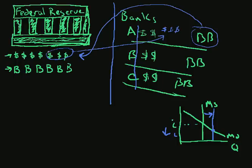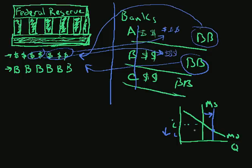Now the Federal Reserve could actually take these dollars, send them over here as well, and buy these bonds. Each one of these instances increases the reserves in these banks so that they can make more loans, increase the money supply, and you get this kind of effect: the money supply increases and the interest rate goes down.